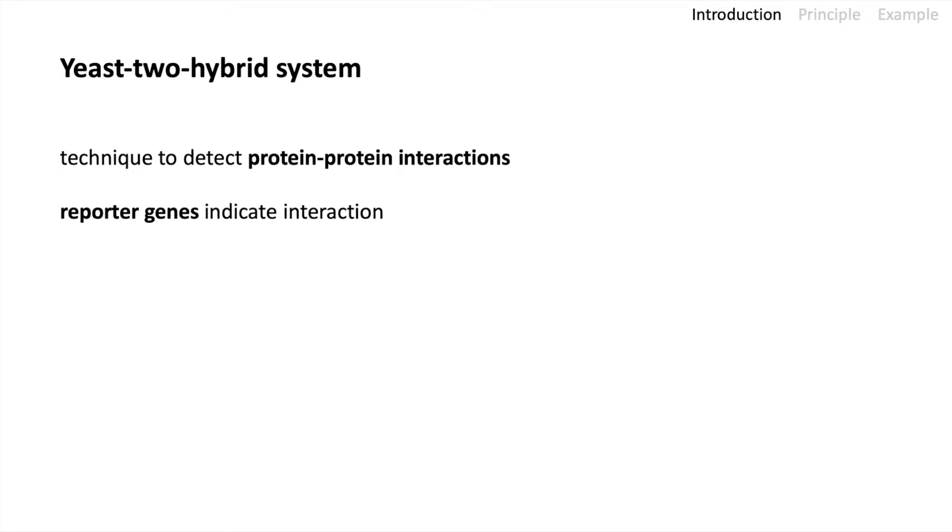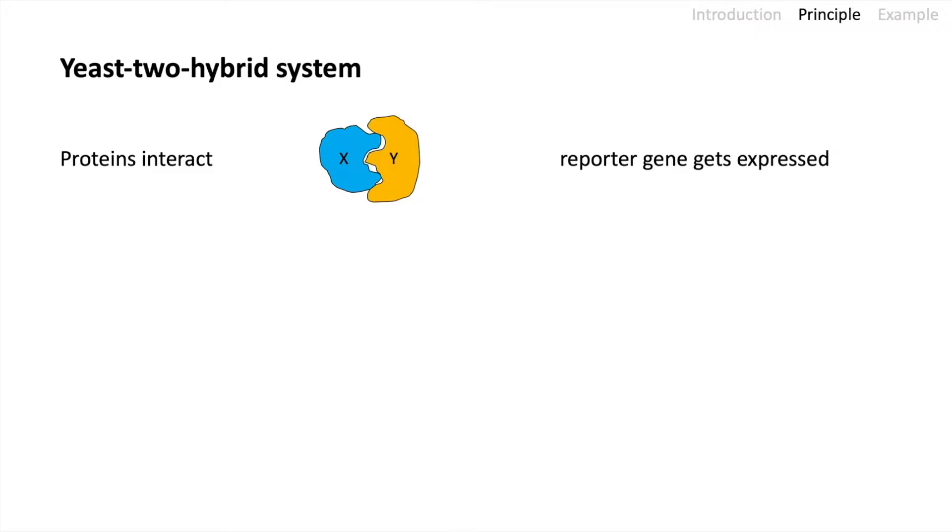I'll just start off to explain the basic principle. What happens if the two proteins interact? Protein X and protein Y have some domains where they interact. Then the reporter gene should get expressed. If the proteins do not interact, however, we have no expression of the reporter gene. That is just the basic principle behind this and now I will explain how the yeast-two-hybrid system works.